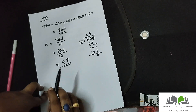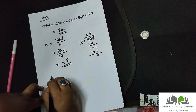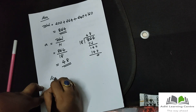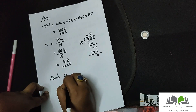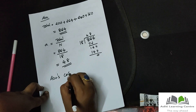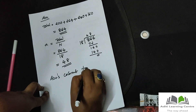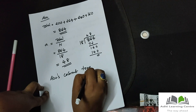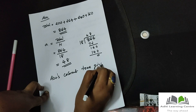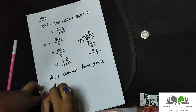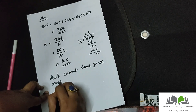This is Abo's coconut tree. Give more coconuts — that coconut tree gives more coconuts.